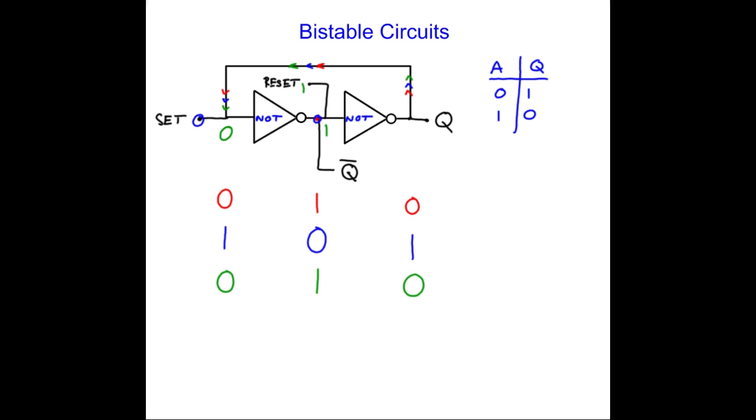So with this bistable, the set and the reset could make the output become 1 or 0. Now we've seen how the bistable works, I've rubbed out all my working.